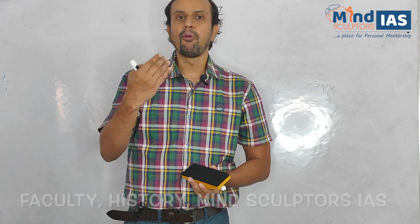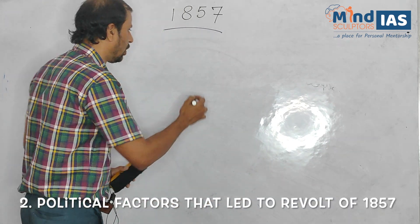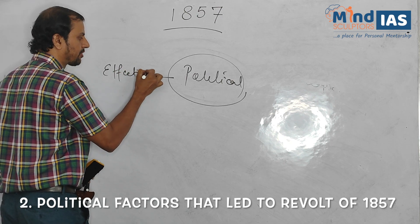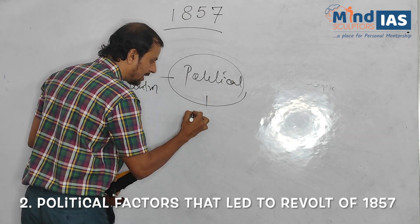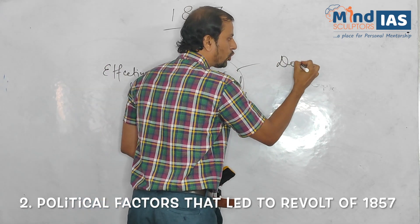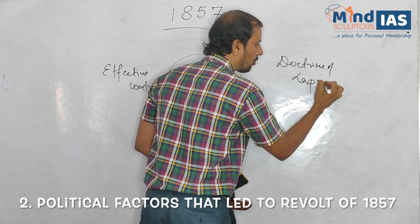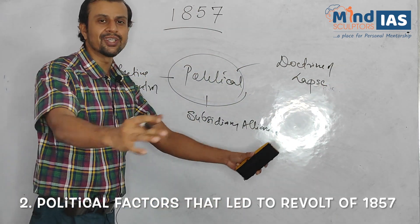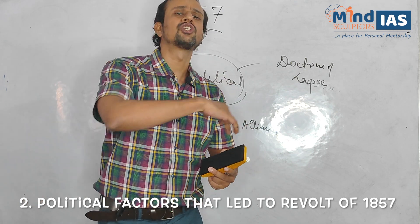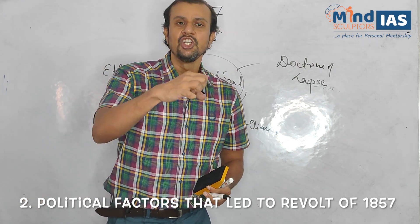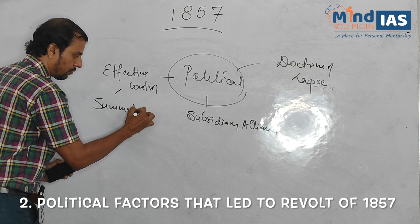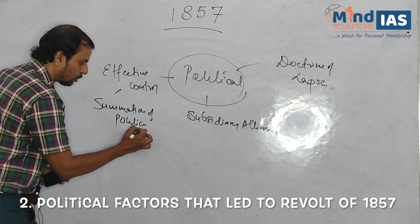Let's discuss the political reasons for the revolt of 1857. The key political factors are: first, effective control; second, subsidiary alliance; and third, doctrine of lapse. These are well-known British policies for conquest in India. Effective control can be termed as the summation of all British policies to maintain de facto control over India.